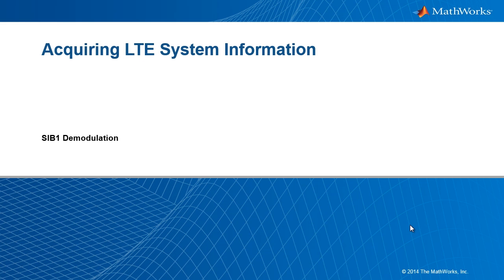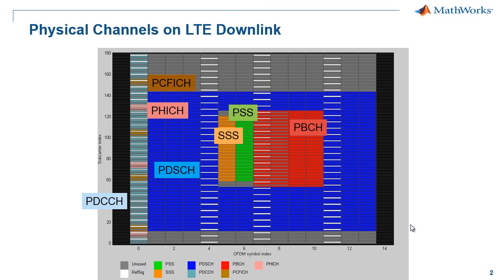Welcome to this discussion of LTE system information. In this video, we will explain the basic structure of system information in LTE and demonstrate how to use MathWorks LTE System Toolbox to acquire system information block type 1, or SIB1, from a live LTE signal. This picture shows an overview of LTE downlink channels and their position in the OFDM grid. If you're not familiar with those channels, we invite you to watch the video titled 'Understanding the LTE Grid' before continuing.